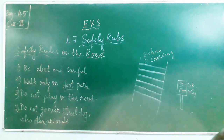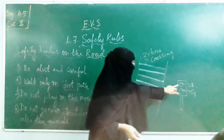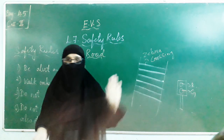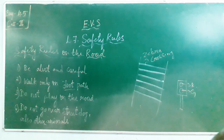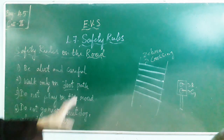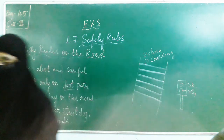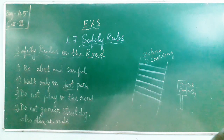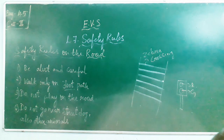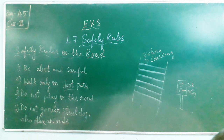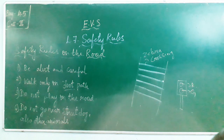Do not cross the road when the pedestrian light is red. Cross the road when the pedestrian light is green. Red light indicates stop and green light indicates go. So this is about the safety rules to be followed on the road.